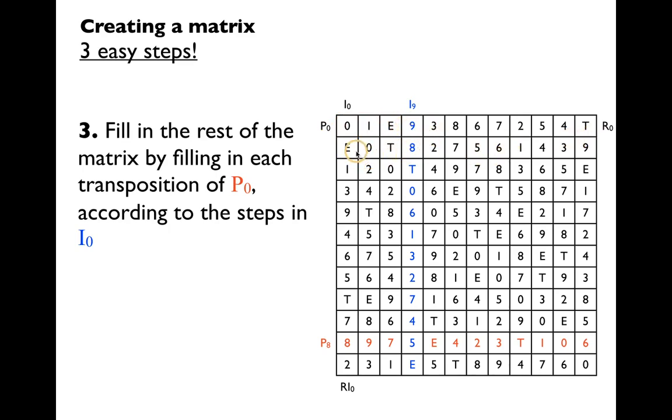In this case, we have a matrix that shows us not just P0 and I0 and RI0 and retrograde zero, but also shows us the main row forms for our piece, P8 and I9. So we can find P8 here and I9 up here. If we wanted to see retrograde inversion nine, we would read up from the bottom. If we wanted to read retrograde eight, we would read from right to left.